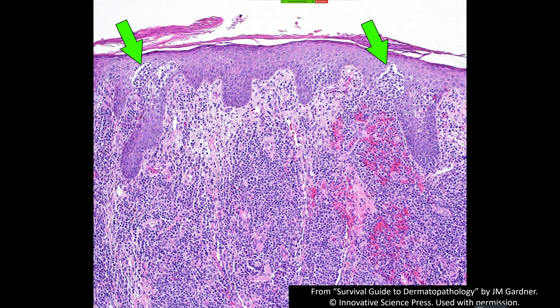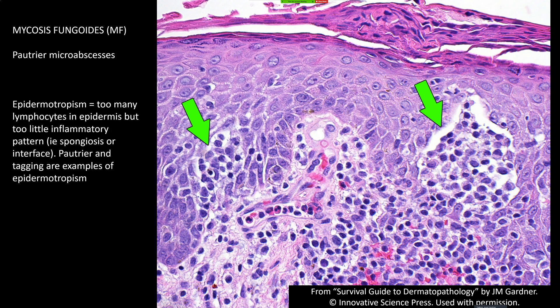Here's a more exuberant example — probably plaque stage or even tumor stage mycosis fungoides. In addition to the dense infiltrate in the dermis, look up here: we have clusters of atypical lymphocytes forming little pockets in the epidermis — those are the classic Pautrier micro-abscesses. You don't always see those in MF. Interestingly, if you ignore those, there's actually not much tagging in this case. Each case is a little different — sometimes tagging, sometimes Pautrier abscesses, sometimes both. If a patient's been applying steroids or had UV exposure, you can lose all epidermotropism, making cases very difficult.